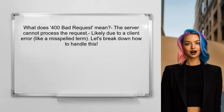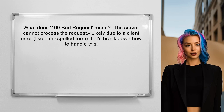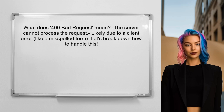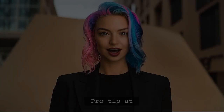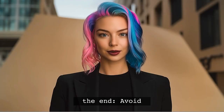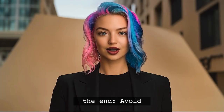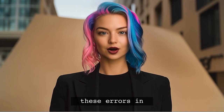So what does this error mean? A 400 bad request indicates that the server cannot process the request due to something perceived to be a client error. In this case, it could be a misspelled search term that the API cannot understand. Let's break down how to handle this — and stick around, because at the end of this video I'll share a pro tip that will help you avoid these errors in the future.